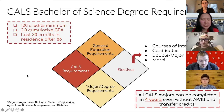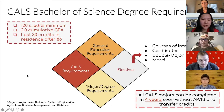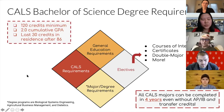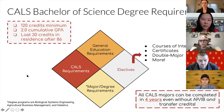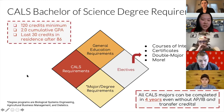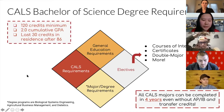We broke those 120 credits down into four categories: general education requirements, CALS requirements, major and degree requirements, and electives. Electives are a catch-all to help you reach 120 credits — courses taken out of interest, to fulfill a certificate (the equivalent of a minor), or a double major. All CALS majors can be completed within four years, even if you're coming in without any AP, IB, or transfer credits.